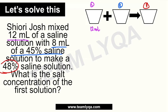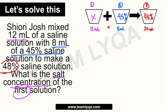Yung pangalawa, 8 ml siya, tapos ang percentage o concentration niya ay 45%. Ang kinalabasan, sabi, ay 48%. Pero hindi sinabi kung ano yung percentage nung una — siya yung hinahanap: what is the salt concentration of the first solution. How do we complete this? Pag in-add natin ito, you have 12 plus 8, ang kalalabasan niya ay 20 ml. So ibig sabihin, yung end product, 20 ml ang dami niya. Meron tayong tapang at dami.